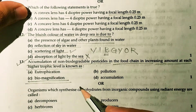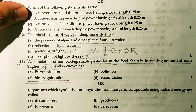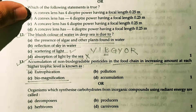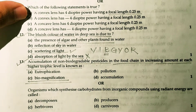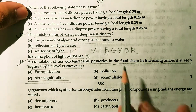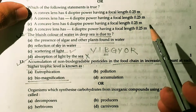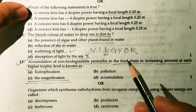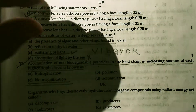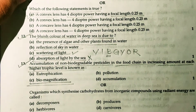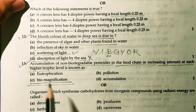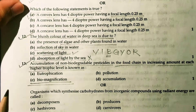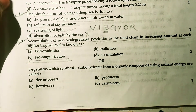Pesticide is applied to a plant. The plant's body absorbs it. This pesticide is highly toxic. When we eat plants or plant products, the pesticide slowly gets into our body. This accumulation process is known as bio-magnification.